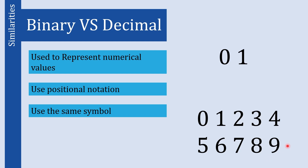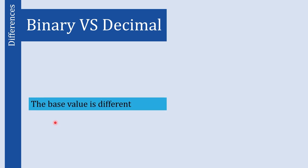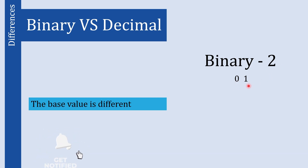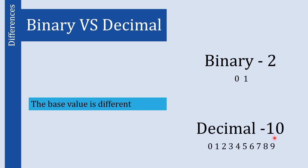Those are three similarities between binary and decimal number systems. Now let's look at the differences. The first difference is the base value — for binary the base is 2 and it uses two digits, 0 and 1, whereas in the decimal number system the base is 10 and the digits are 0 to 9.